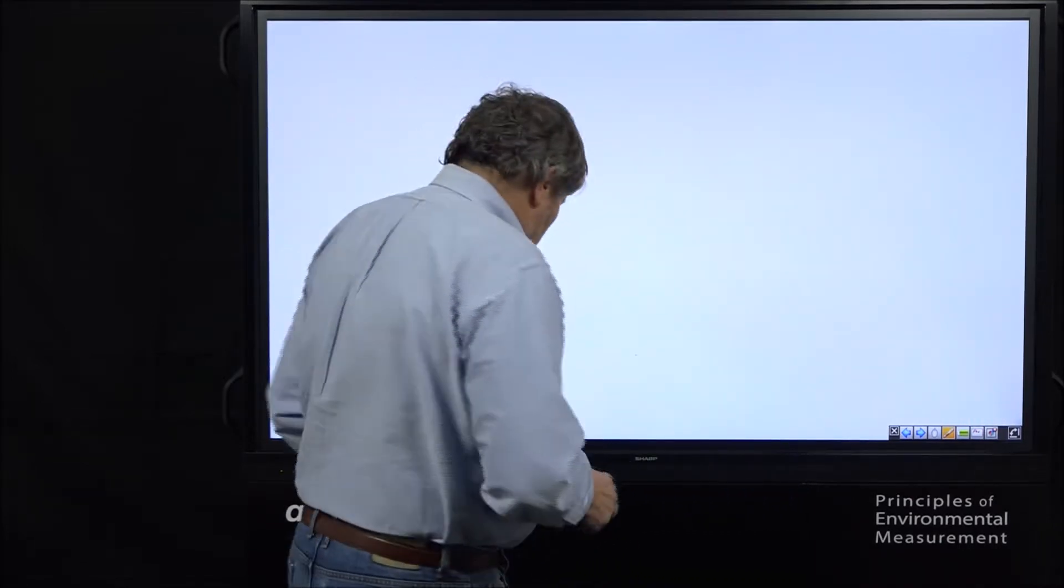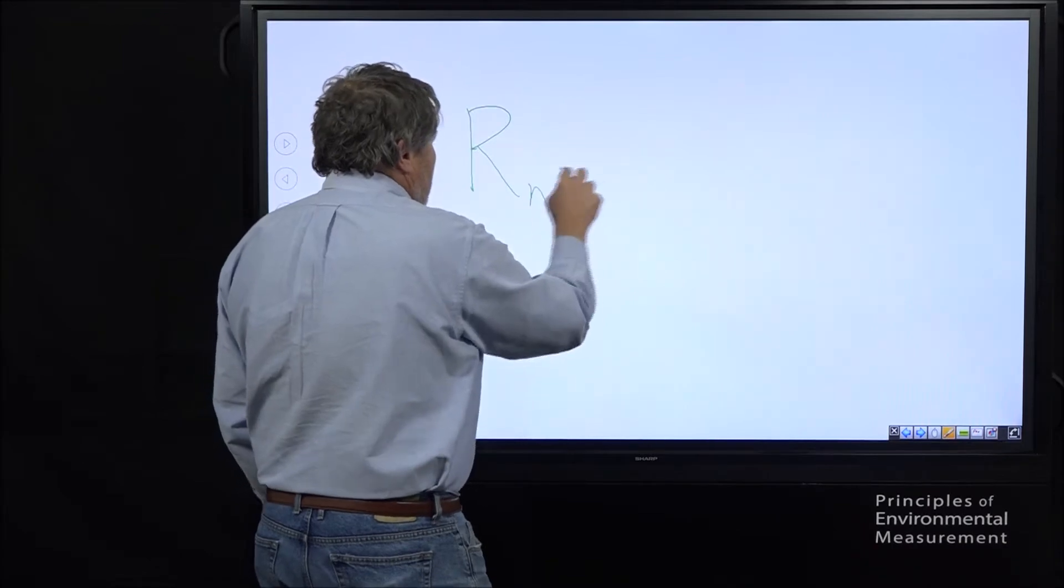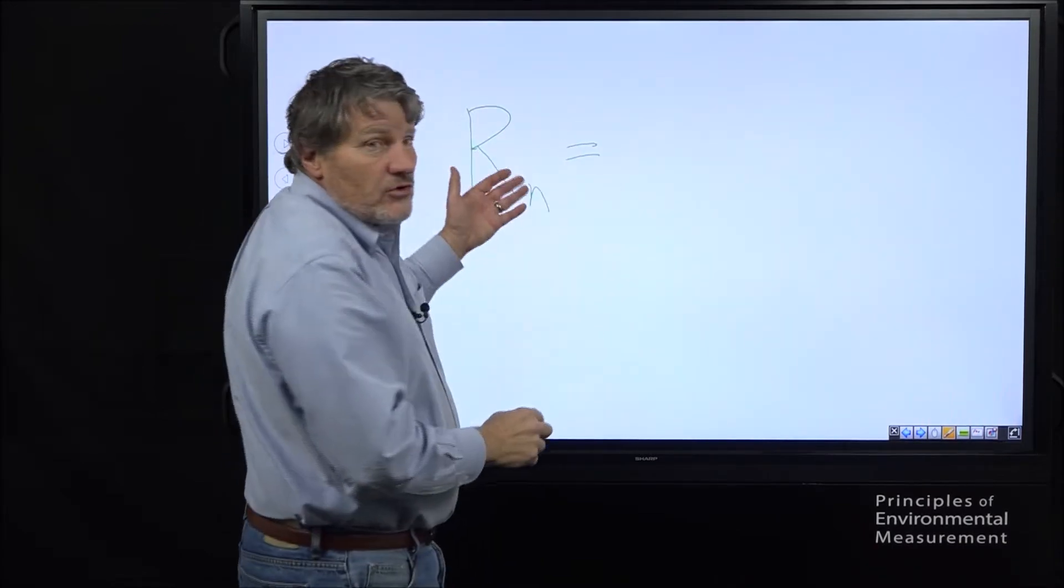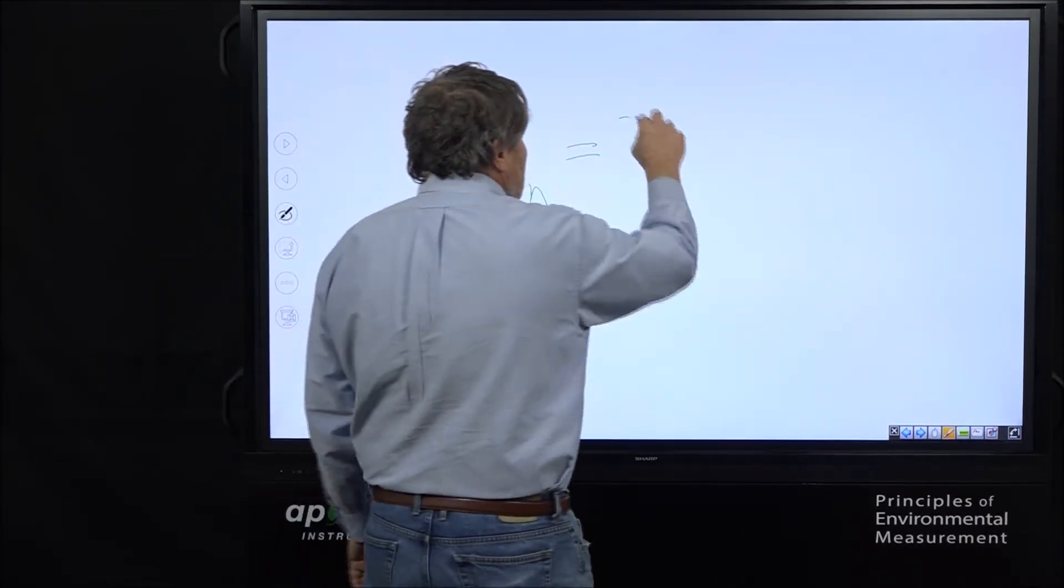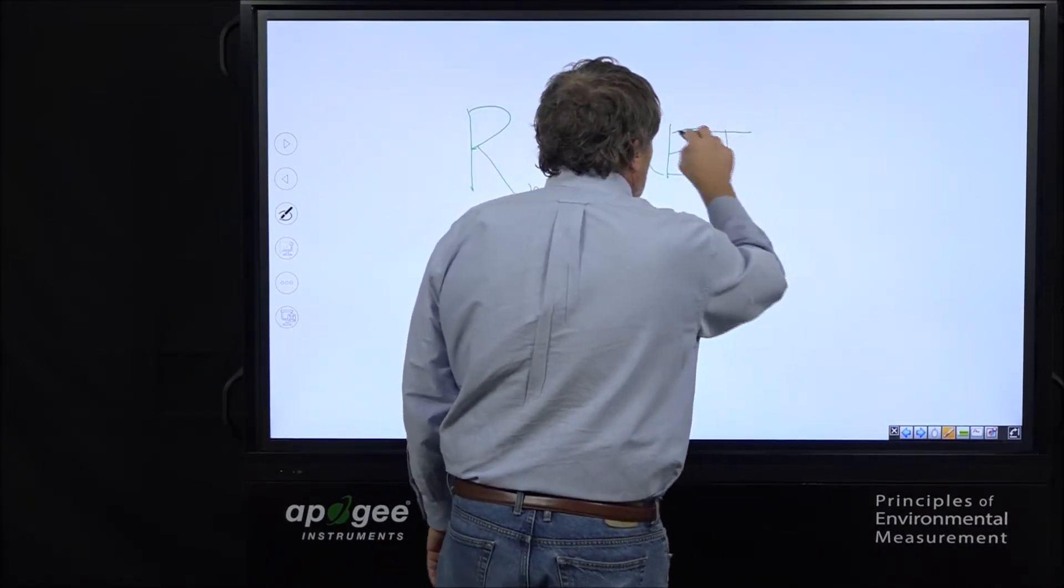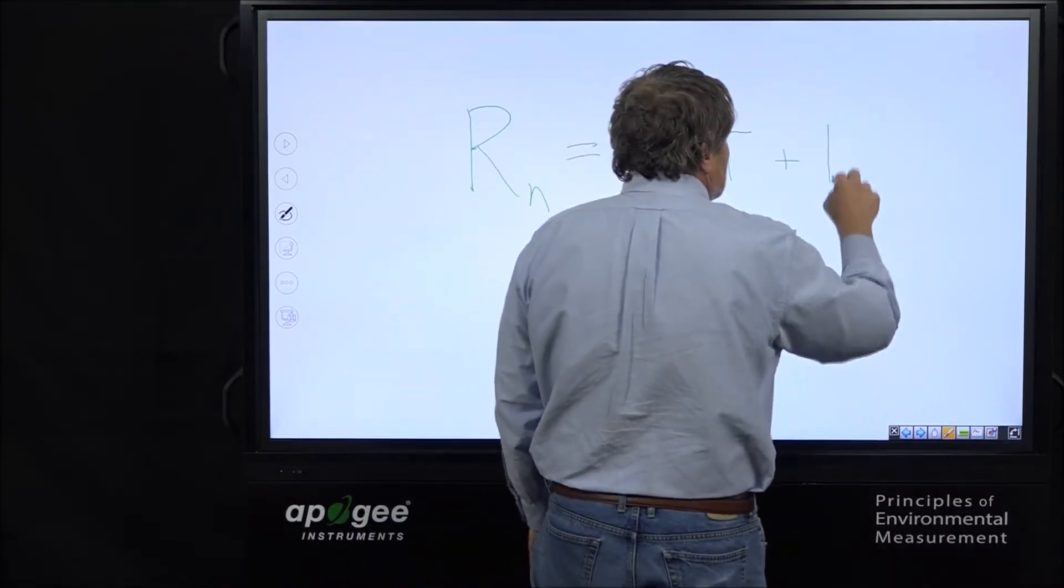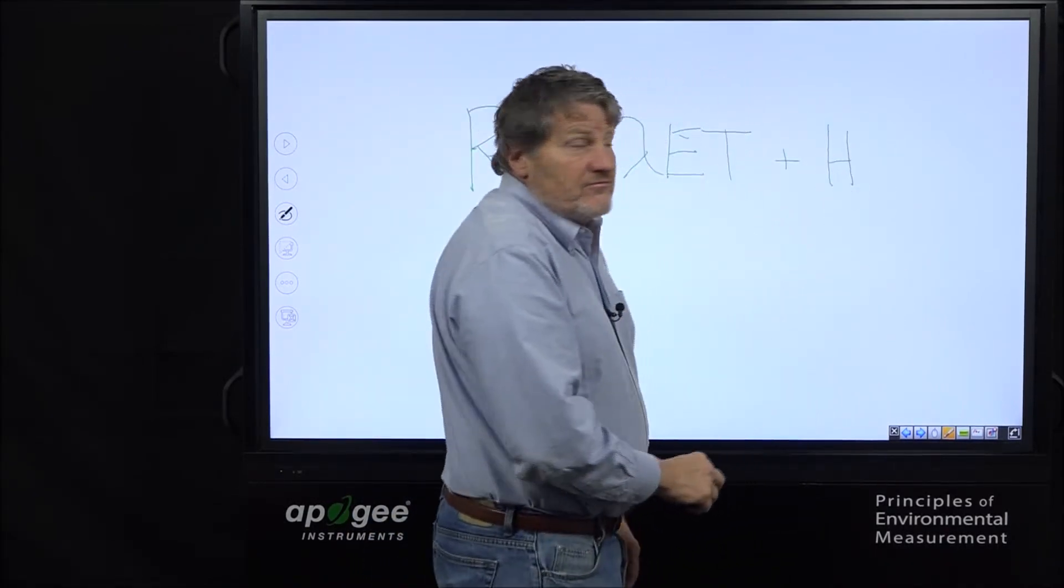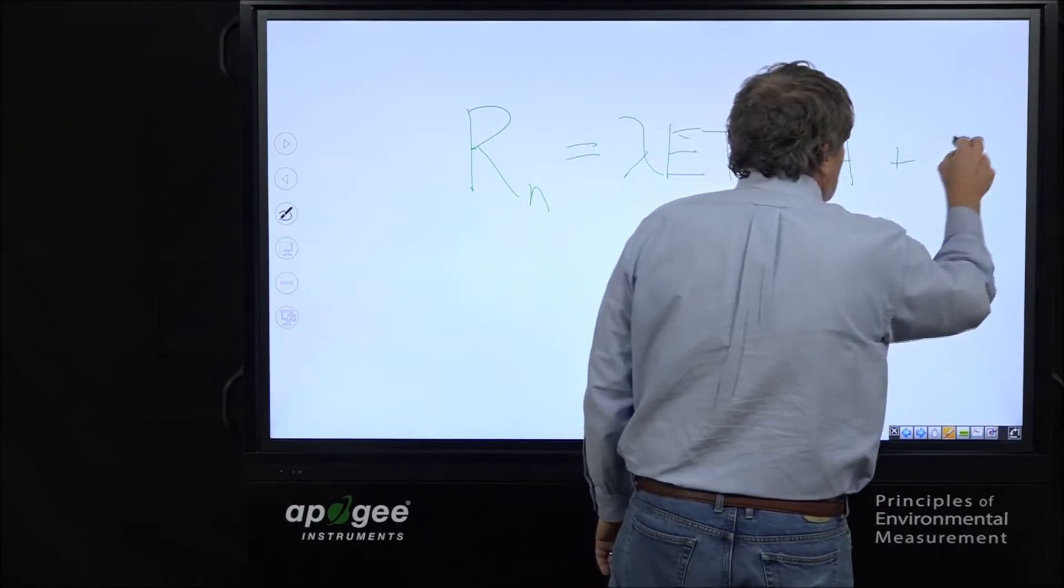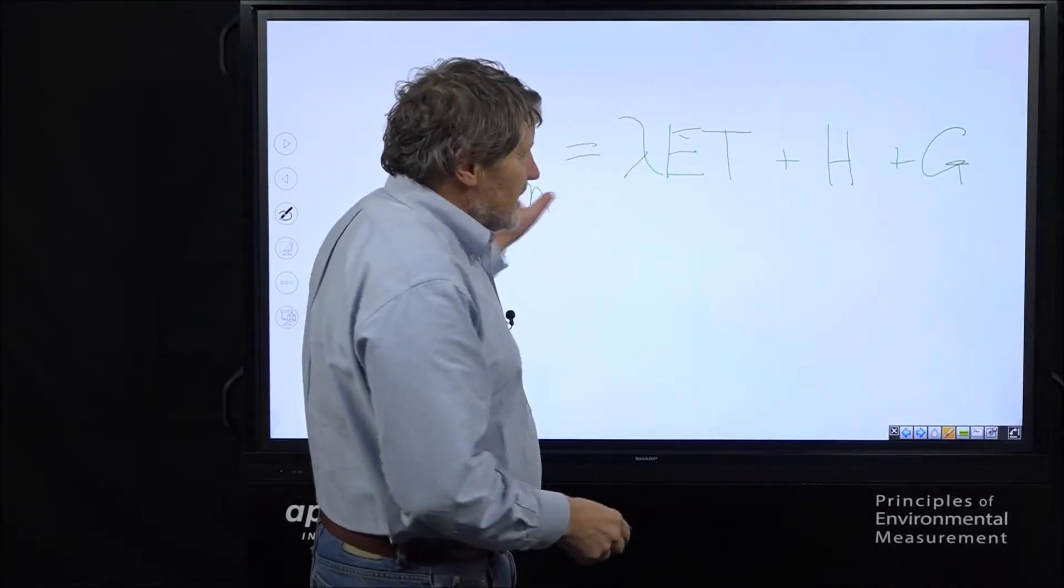Here's what the model looks like. So we have Rn, which is the thing we're talking about, equals lambda Et evapotranspiration plus H is sensible heat flux, plus G is soil heat flux.